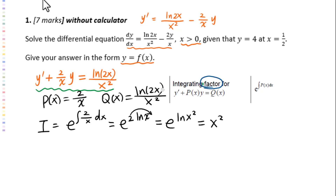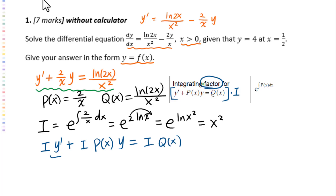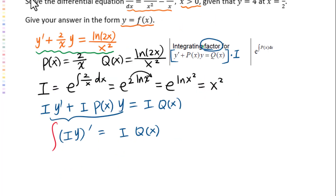The integrating factor method means multiplying both sides of the equation by i. Multiplying i times y prime plus i times P of x times y equals i times Q of x. This gives us the derivative: d/dx of i times y equals i times Q of x. Then taking the integral of both sides, we get i times y equals the integral of i times Q of x dx.